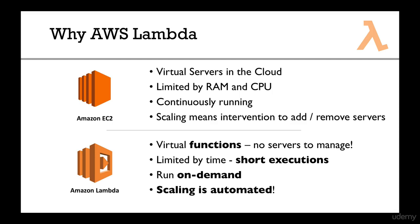You can have one Lambda function instance, but if tomorrow you get huge demand, the scaling is automated. You will get 1,000 Lambda function instances running for you without you doing anything. You pay for what you use and they give you as much as you need. That's why it's called serverless — you don't need to manage your infrastructure anymore. AWS manages your infrastructure. What you do manage is your functions, which is what your application does.